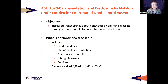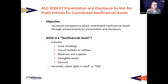What was the FASB's objective in issuing this accounting standards update? Their goal is to increase transparency about contributed non-financial assets through enhancements to presentation and disclosure. It's important to emphasize that this ASU did not make any changes to revenue recognition — the only change is to the presentation and the disclosures in the financial statements. That said, this gives us a good opportunity to refresh ourselves on the accounting for gifts in kind and how you do recognize the revenue.